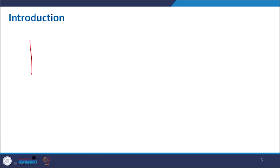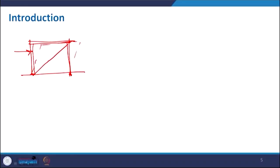Let us understand why triangulation helps. Suppose we have a post-beam structure; due to lateral force it will try to bend and eventually collapse. But if we add a tie member — a diagonal brace — it becomes more stable. This divides the rectangle into two triangles. Similarly, a flat plate under load develops a sagging moment, but if we fold it, the load is transmitted through compression in the two members, and a bottom tie resists the tension.